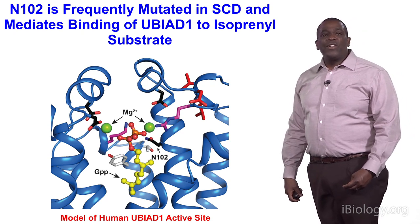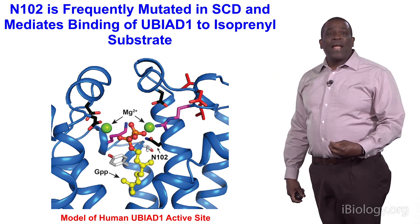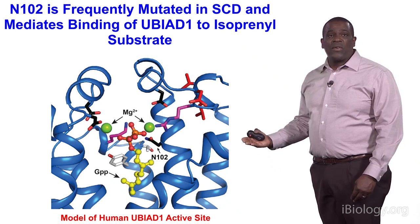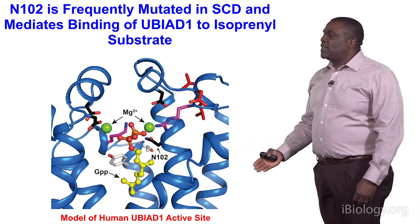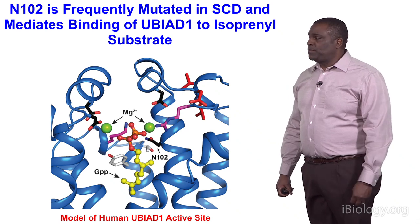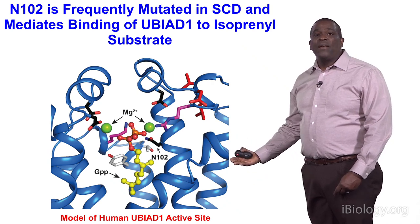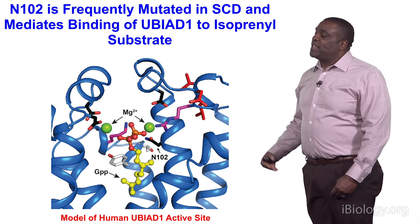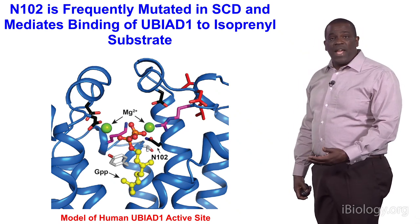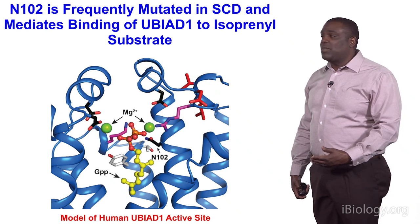We focused on asparagine 102 of UBIAD1, the most frequently mutated residue in SCD patients. A model of the human UBIAD1 active site, built on the bacterial crystal structure, shows that asparagine 102 mediates binding of the isoprenyl substrate. The SCD-associated mutation found in humans is asparagine 102 to serine (N102S), predicted to disrupt GGPP binding. Indeed, mutation of asparagine 102 completely abolishes the enzymatic activity of the UBIAD1 protein.